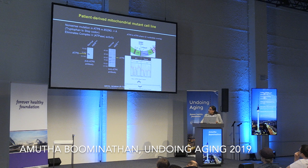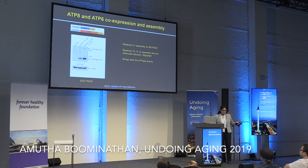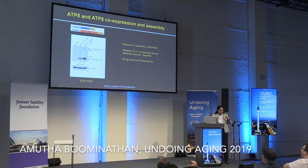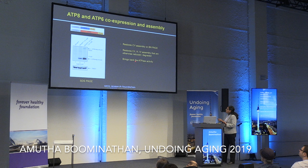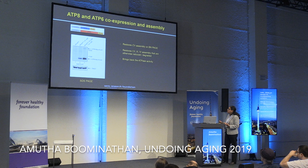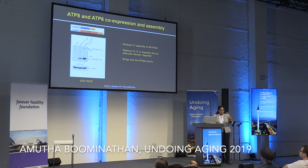We co-expressed the ATP8 and ATP6 proteins in this cell line — this is published work. In this mutant cell line, complex 5 is completely disintegrated. When we put back both proteins, we were able to restore complex 5 assembly. Several other complexes that were lowered or disassembled were also largely restored. It also brings back ATPase activity, confirmed by both in-gel activity assay and the quantitative spectroscopic PK-LDH assay.